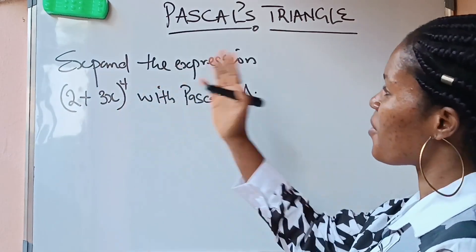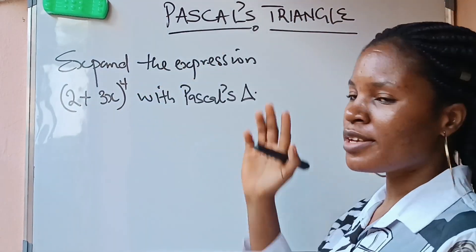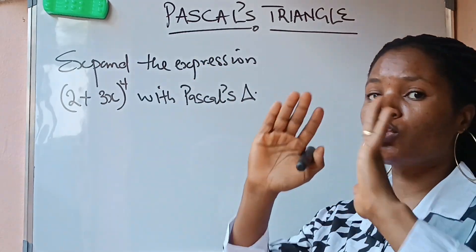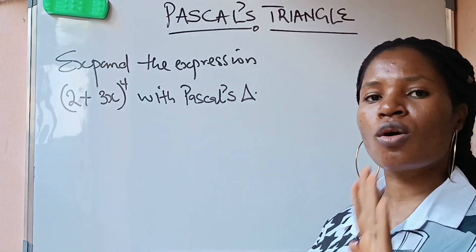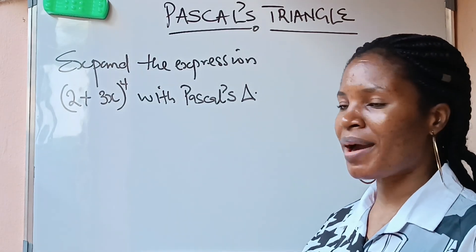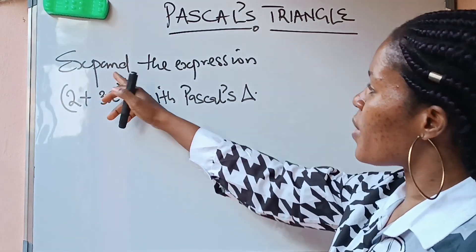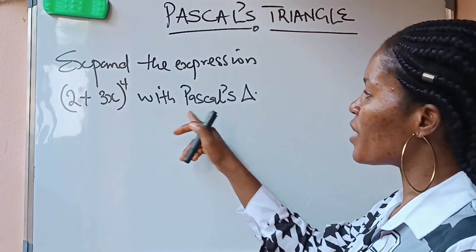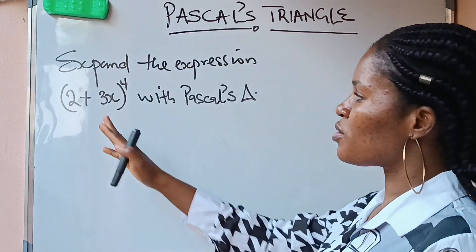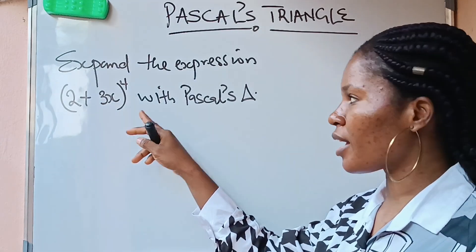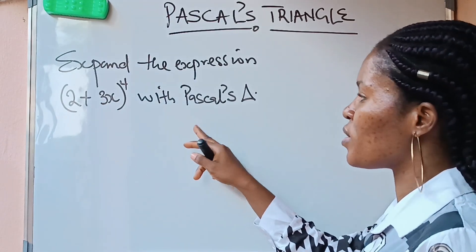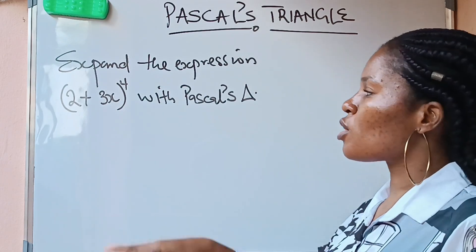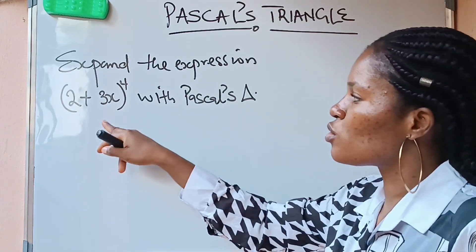Welcome to my channel. In today's class we are going to discuss — I told you in my previous class when I talked about Pascal's triangle, how to draw it, that we are going to use it to solve some algebra. We are asked to expand the expression (2 + 3x) raised to the power of 4 using Pascal's triangle. You cannot just expand this like 2+3x into 2+3x into 2 and more — you are going to make mistakes. So let's use Pascal's triangle to get this.